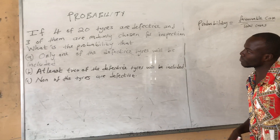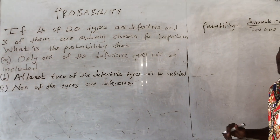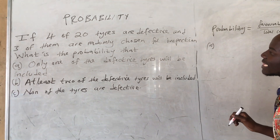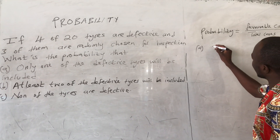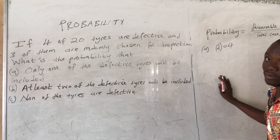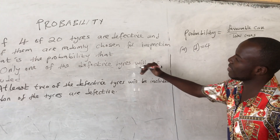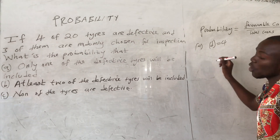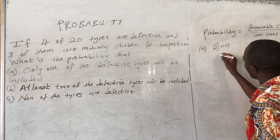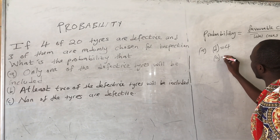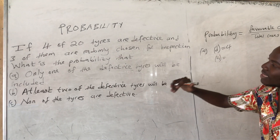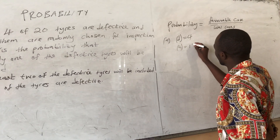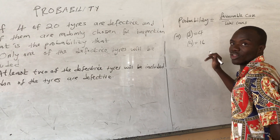Here we have 4 of 20 which are defective. So 4 are defective. Since the total is 20, when we subtract 4 from 20 we get 16, which are not defective — those which are good. So out of 20, since 4 are defective, the other 16 are good.